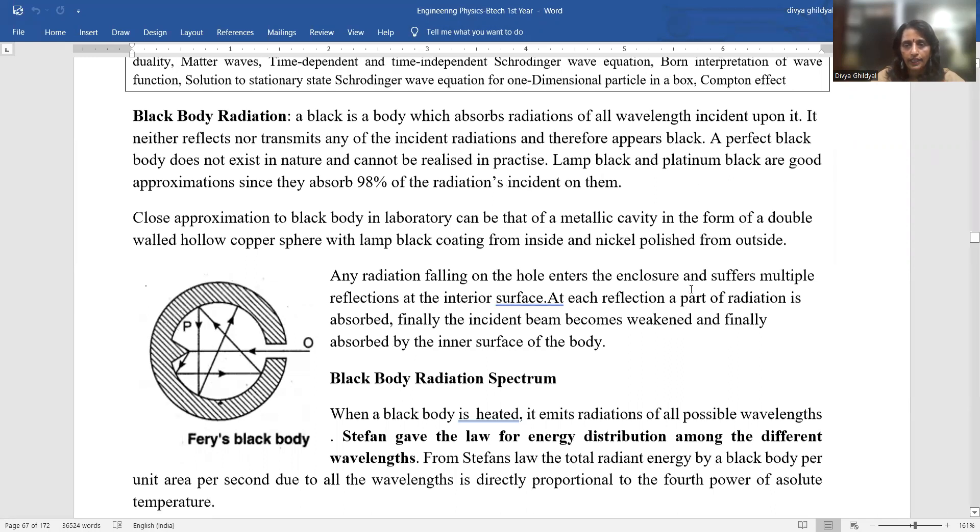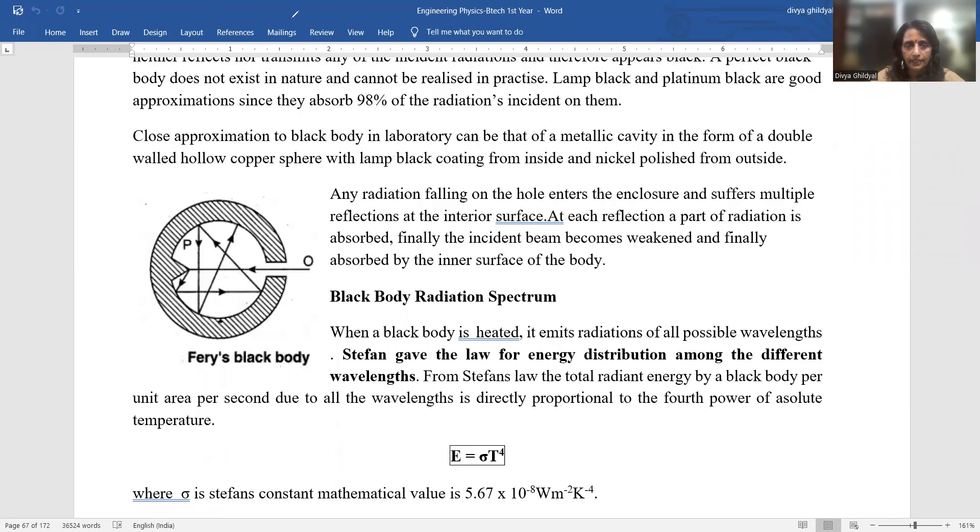If you want to make a Black Body in the lab, a very simple method is to take a metallic cavity in the form of a double wall - a hollow copper sphere with lamp black coating inside and nickel outside. When radiation falls in this cavity, it enters and suffers multiple reflections inside at the interior surface. At each reflection, a part of radiation is absorbed. Finally, the incident beam becomes weak and is absorbed by the inner surface of the body. This is an approximate example of Black Body, not 100%.